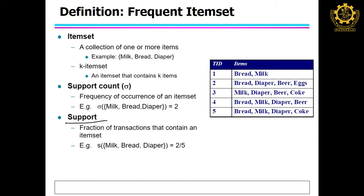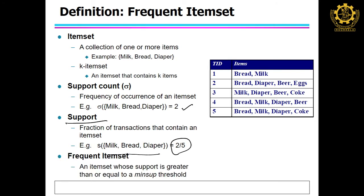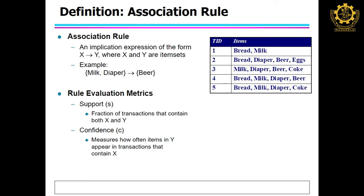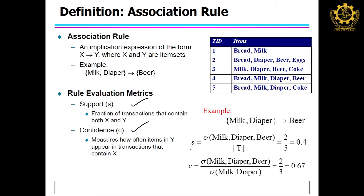Support is the fraction of transactions that contain the particular itemset. For example, milk, bread, diaper occurs twice, but out of how many transactions — that gives you the support. Finally, we said something called the frequent itemset: if one itemset occurs many times, we call it a frequent itemset, and that threshold is decided based on some minimum support. The association rule is evaluated by two metrics which decide whether an association rule is valid: one is support and the other is confidence. The number of transactions here is 5.